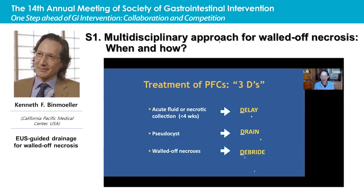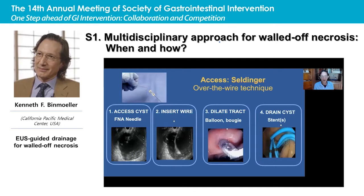Debridement can be indirect — irrigation — or direct debridement necrosectomy. Our first step is to access the pancreatic fluid collection. We have historically used the Seldinger over-the-wire technique borrowed from our interventional radiologists: access the cyst with the FNA needle, insert a guide wire, and then over the guide wire, dilate the tract with a balloon or a bougie, then replace with one or more stents to drain the cyst.